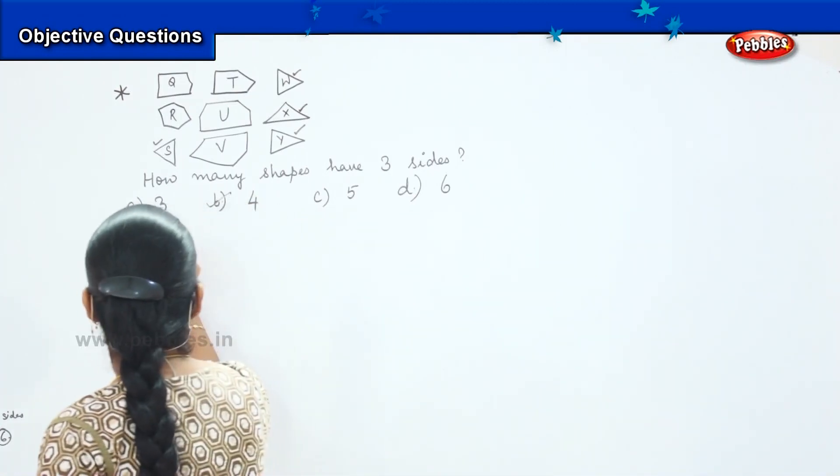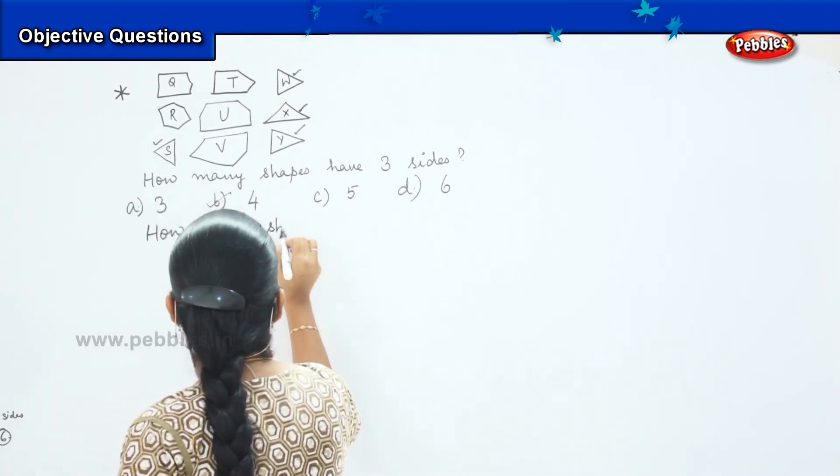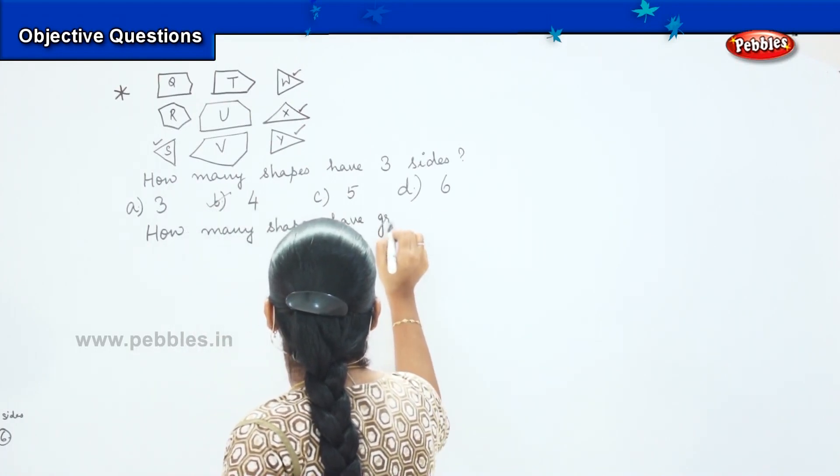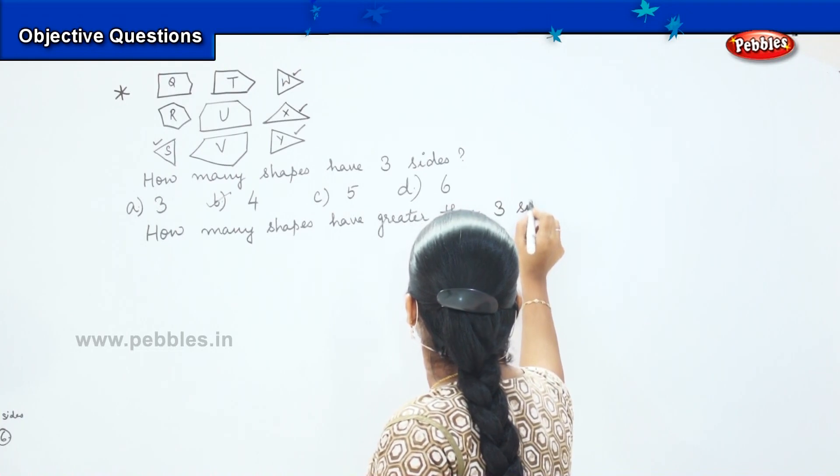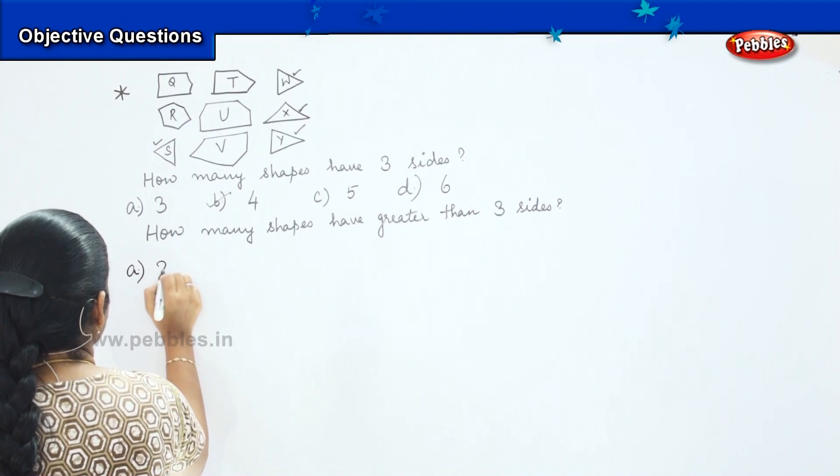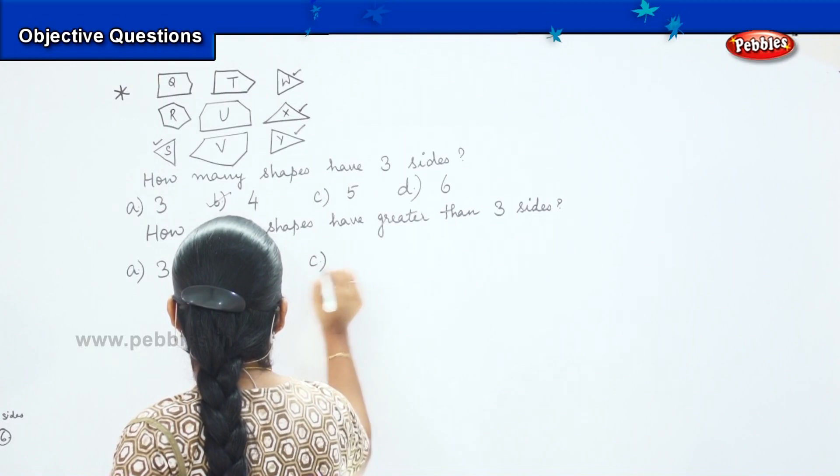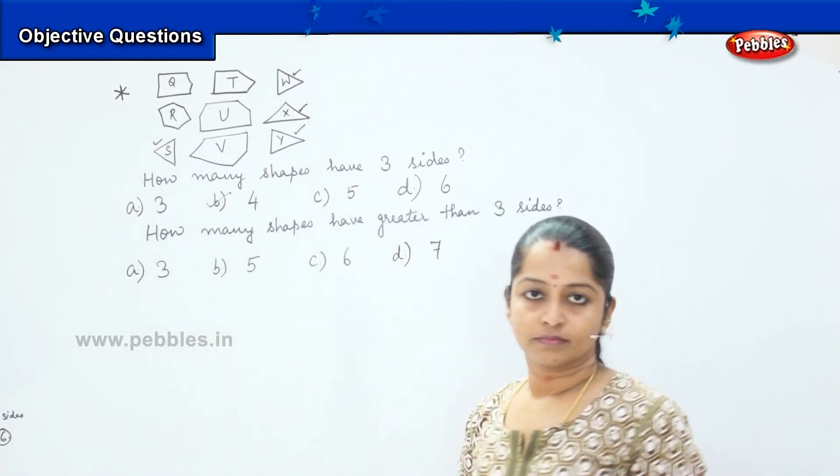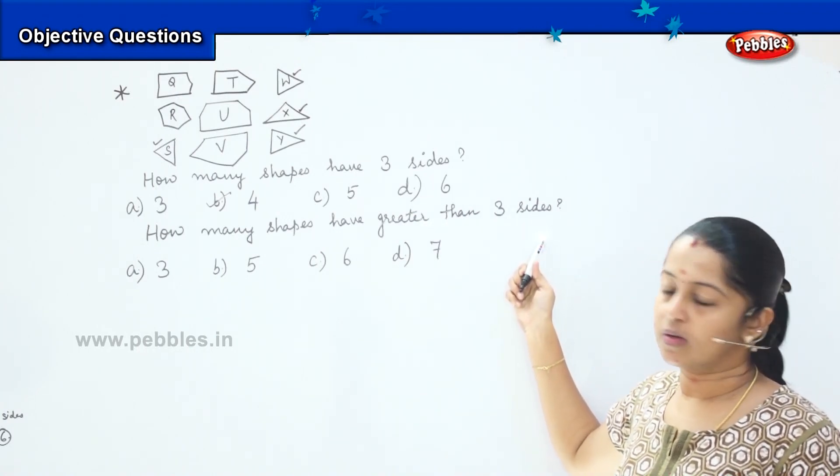The next set of question is, how many shapes have greater than three sides? So, my options are A, 3, B, 5, C, 6, and D, 7. So, you have to tell me the shapes which has greater than three sides.